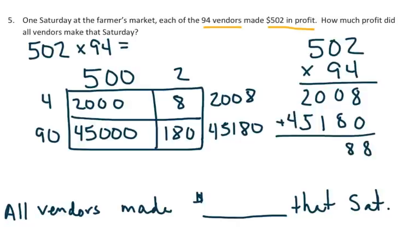So when I add these all together, I have an answer of all the vendors made $47,188 that Saturday. If the students were using the reasonable estimate, they would have multiplied 500 times 100 and they would have got 50,000. And that would have been very close to 47,188.